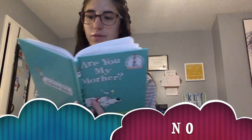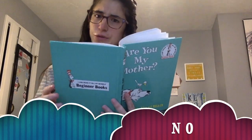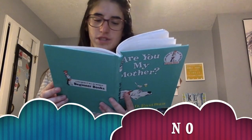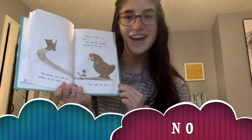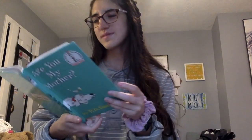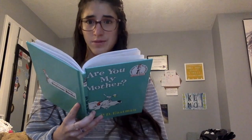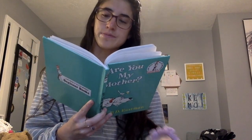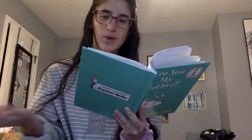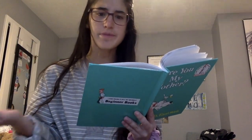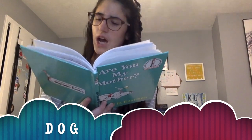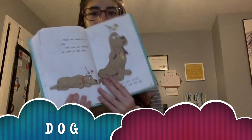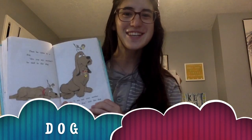The kitten was not his mother. So he went on. I have to find my mother, he said. But where? Where is she? Where could she be? Then he came to a dog. Are you my mother? He said to the dog. I am not your mother. I am a dog, said the dog. The sight word is dog — D-O-G.